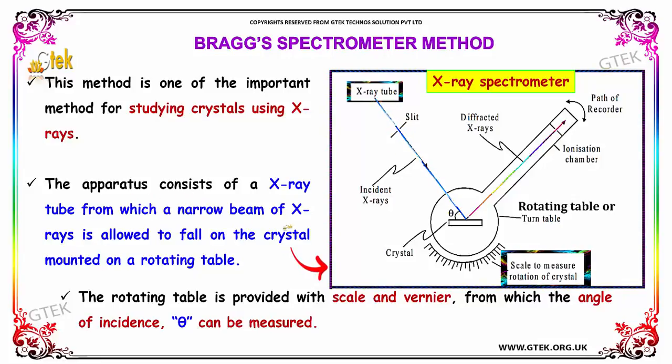The apparatus consists of an X-ray tube from which a narrow beam of X-rays is allowed to fall on the crystal mounted on a rotating table. The rotating table is provided with a scale and vernier from which the angle of incidence theta can be measured.